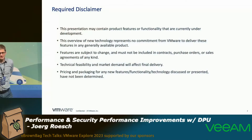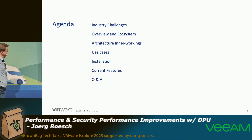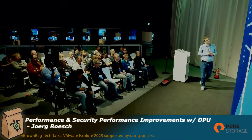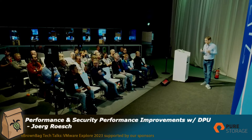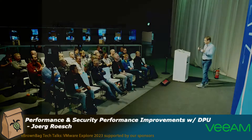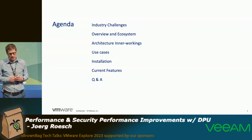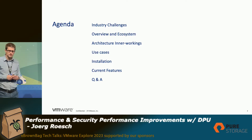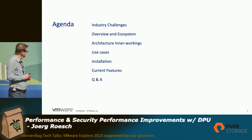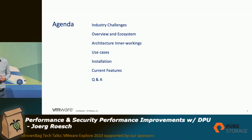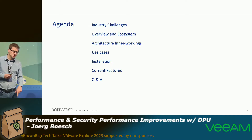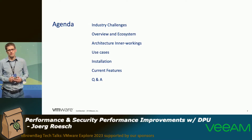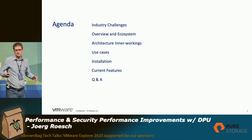Usual disclaimer, so please take it into account. Short agenda: first I want to talk about the industrial challenges, then an overview of our solution with DPUs, then the architecture and inner workings — how the DPU is designed from the hardware perspective and the data path model. Afterwards, some use cases, the installation part, and the current features supported with our distributed service engine — the name for DPU support with vSphere 8 and NSX 4. Hopefully we have some time for Q&A.